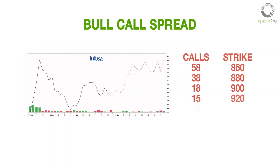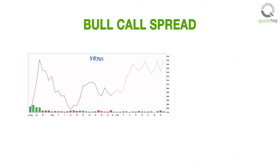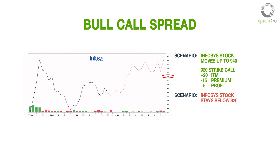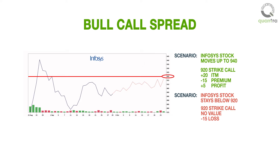One way to monetize on this view is to buy a 920 strike call for 15 rupees. If the trader's view is right and the stock indeed moves to 940 rupees, then the 920 strike call will be in the money by 20 points, and after deducting the premium paid, the net profit will be 5 rupees. If the trader's view is wrong, then he will lose out on the premium of 15 rupees. A risk of 15 rupees for a reward of 5 rupees doesn't look like the right thing to do.